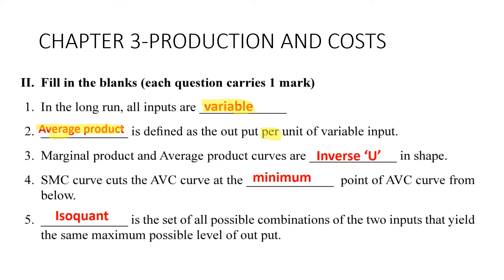Third: marginal product and average product curves are inverse U-shaped. Fourth: the SMC curve cuts the AVC curve at the minimum point of the AVC curve from below — it cuts from the minimum point.